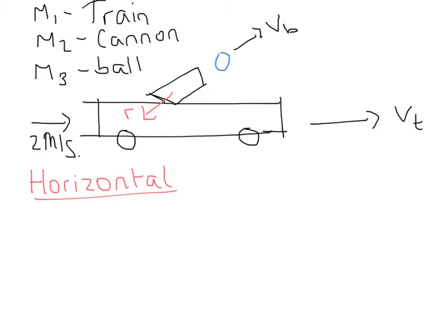vb up here is the velocity of the ball after the explosion. r is the recoil velocity after the explosion. vt is the velocity of the train following the explosion. And the 2 meters per second is the velocity of all of the parts before the explosion.